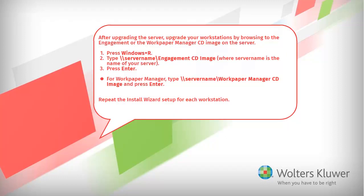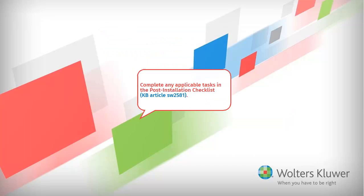After upgrading the server, upgrade your workstations by browsing to the Engagement or Work Paper Manager CD image on the server. Repeat the install wizard setup for each workstation. And finally, complete any applicable tasks in the post-installation checklist.